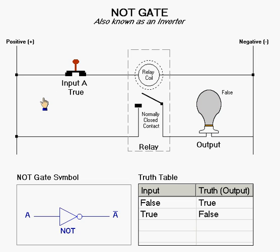But now observe switch A. It is now closed. This represents an input of true. In this state, current will flow through the switch.